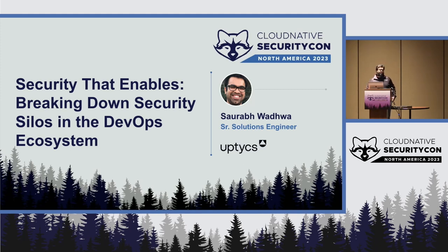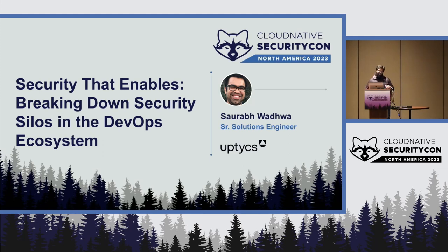So what do we mean by security that enables? Any CI/CD pipeline — or as I like to call it, innovation pipeline — consists of different components working together. The developer's aim is to release code at a really fast pace, and they can overlook security. But the ultimate aim is to make sure that security does not hamper innovation. Security that enables basically enables the developers, the security team, and the operations team to be successful. There has always been friction between security and developers, and we want to make sure that friction goes away.